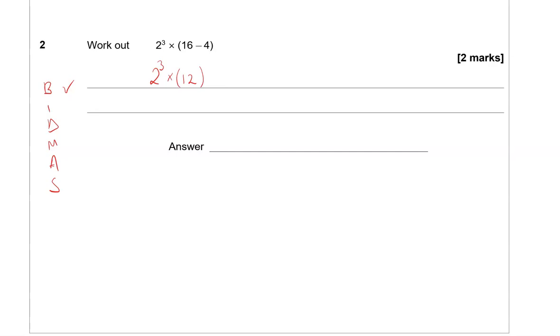So we've done the brackets. Now what else do we have? We have indices, powers. That's the next one here. So 2 to the power of 3 is the same as saying 2 × 2 × 2. 2 × 2 is 4, times 2 is 8. So 2³ = 8.